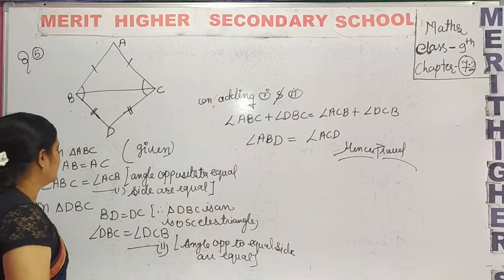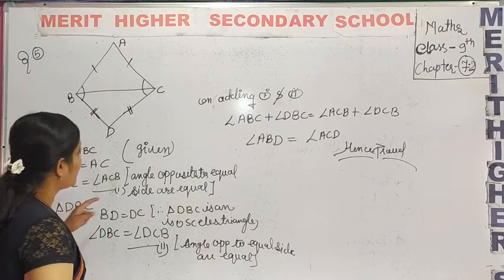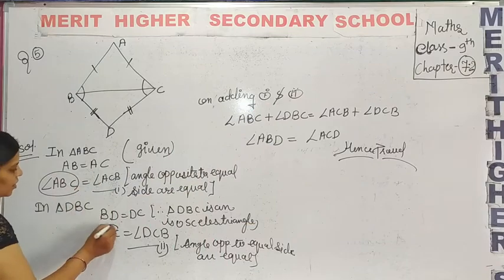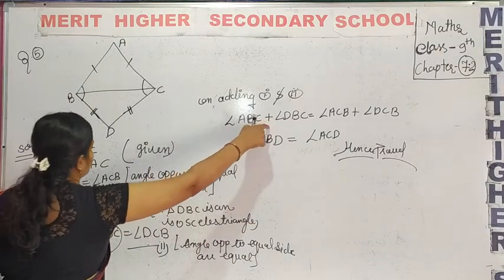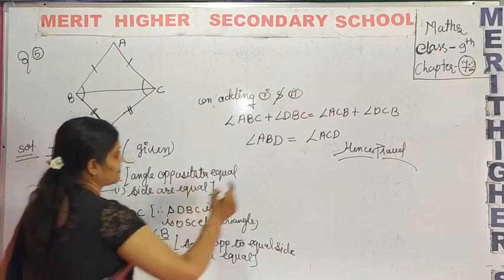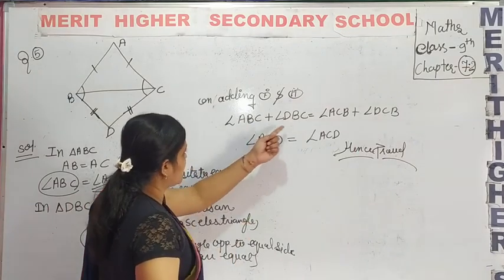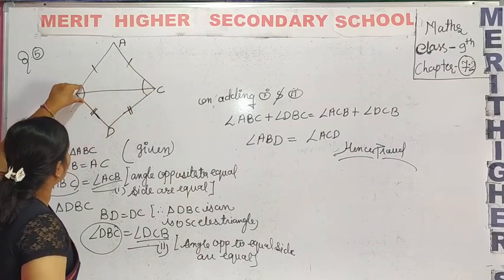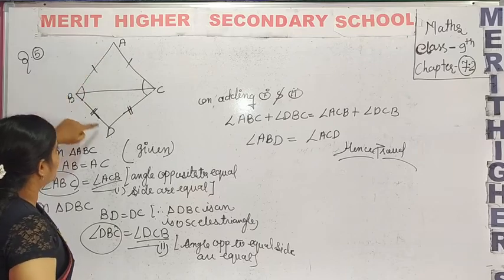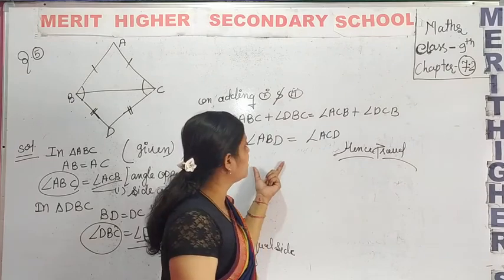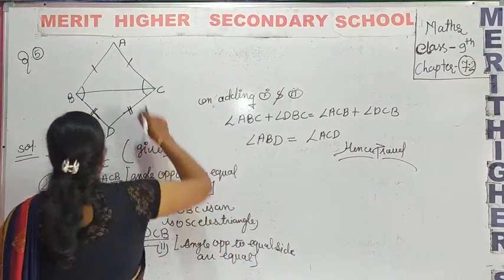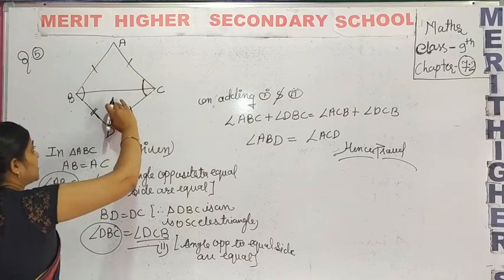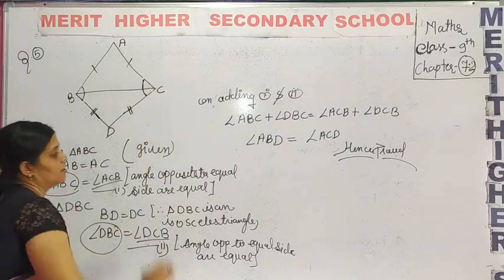On adding equation one and equation two: angle ABC plus angle DBC equals angle ACB plus angle DCB. So we write angle ABD equals angle ACD.